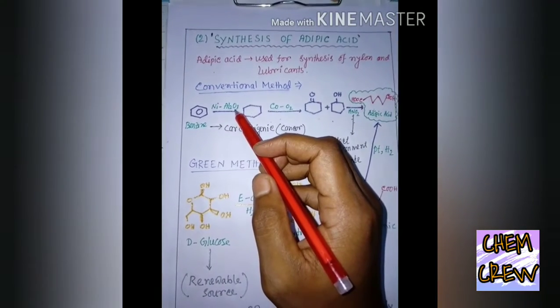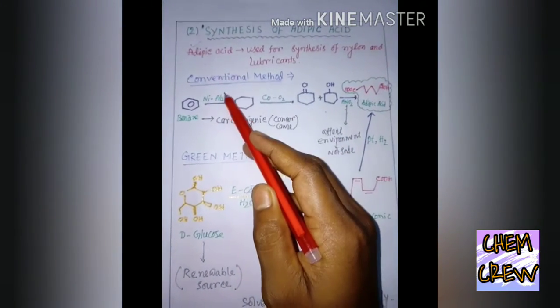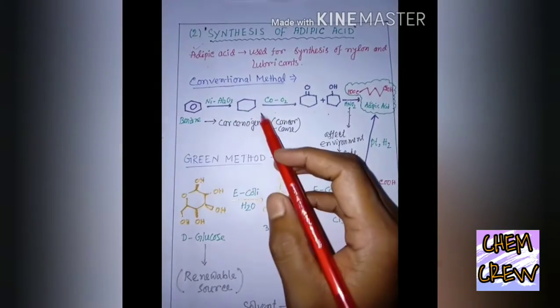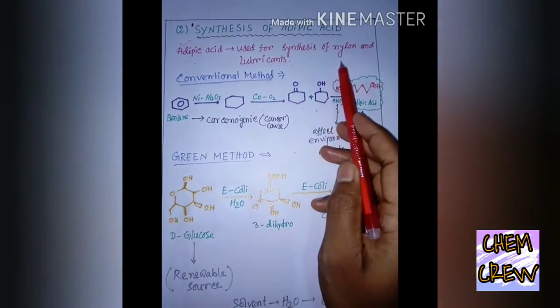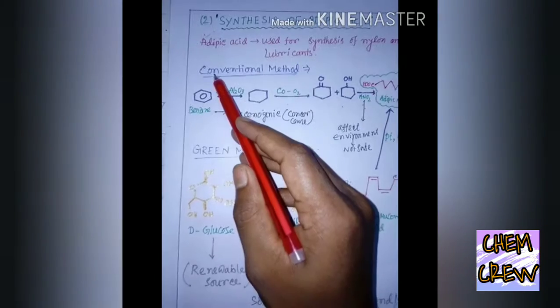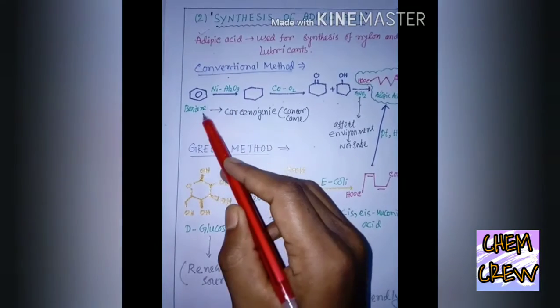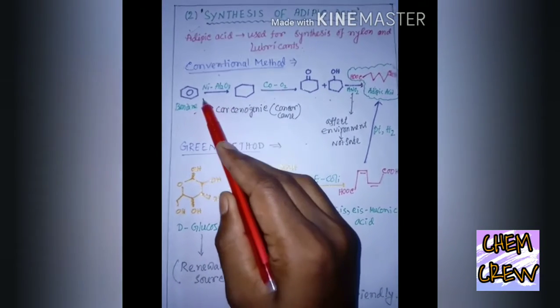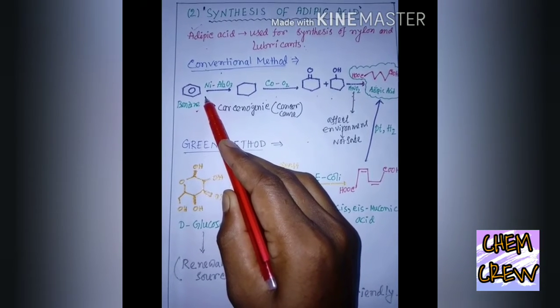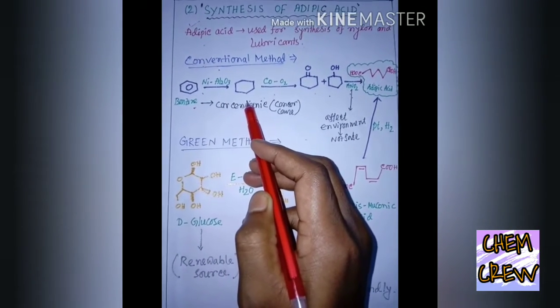Now, very important synthesis: the synthesis of adipic acid. Adipic acid is very important, which is used for synthesis of nylon and lubricants. In the conventional method, we are taking benzene. It is treated with nickel-Al2O3 and it is changing into cyclohexene. Now,